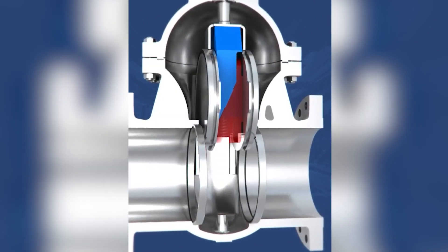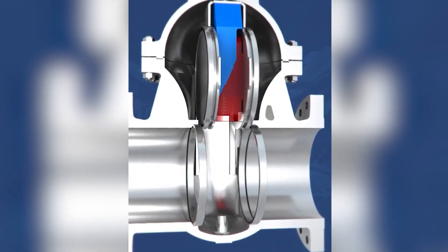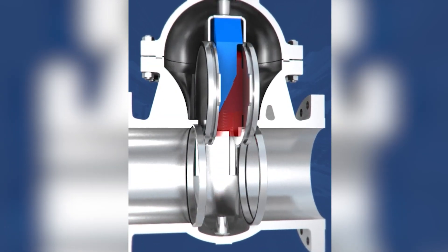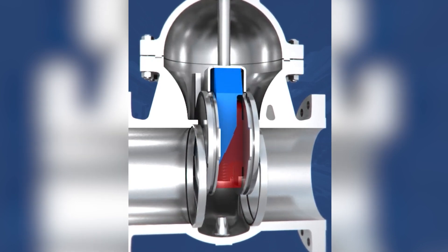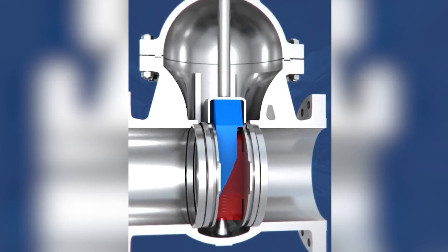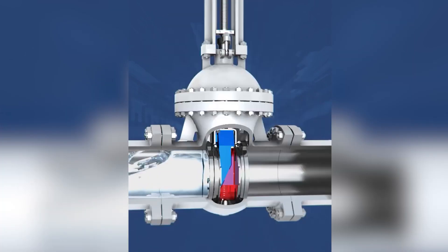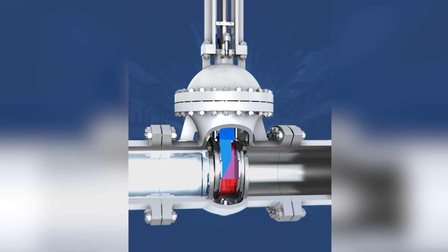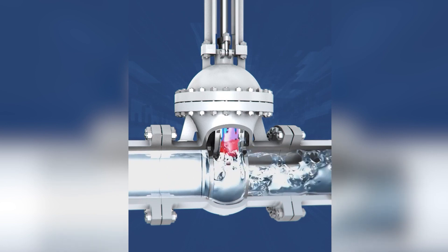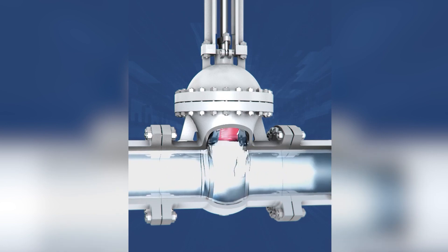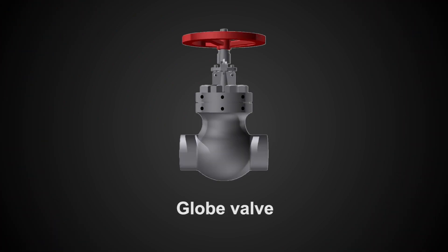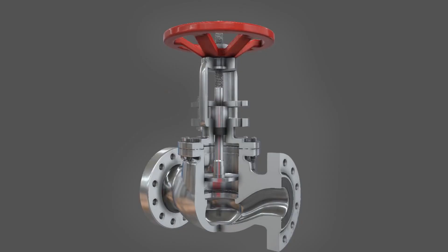Fifth one: parallel slide valve. It has two discs without a wedging mechanism which slide between two parallel body seats. The actuation of the valve disc is by internal and external screw on the spindle, and the spindle may be of the rising or non-rising type.